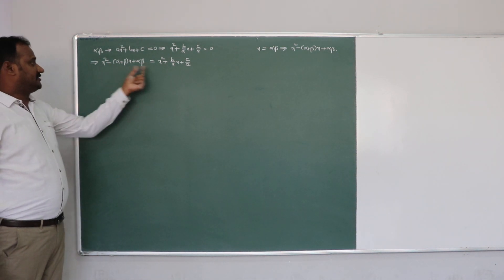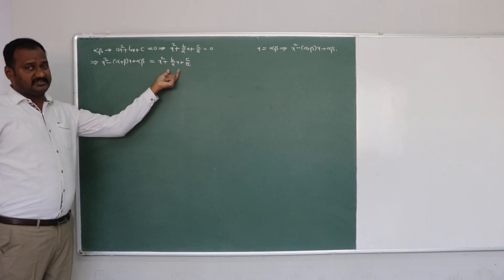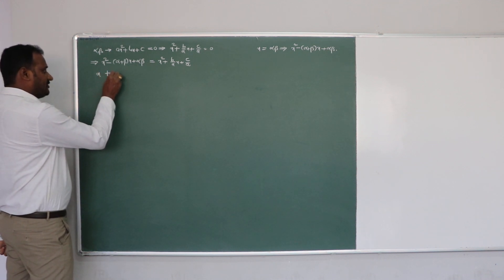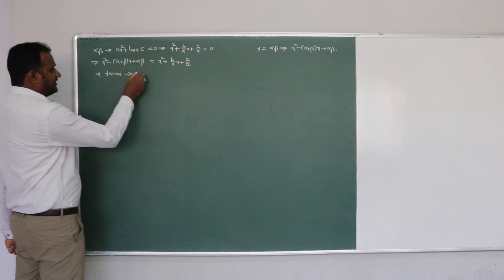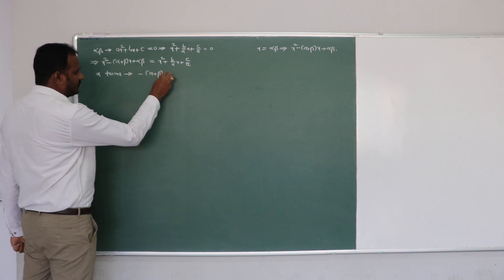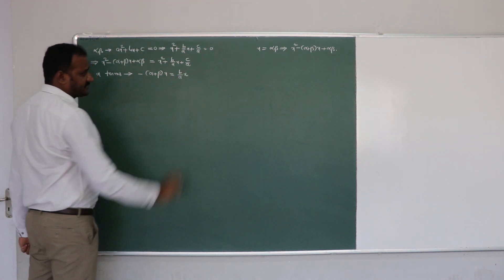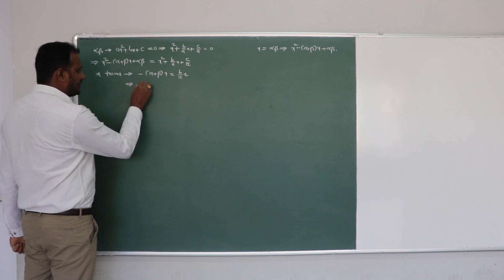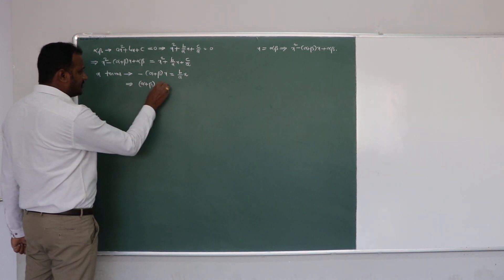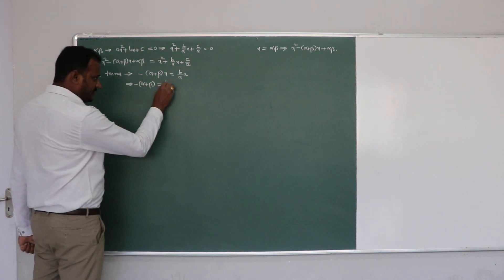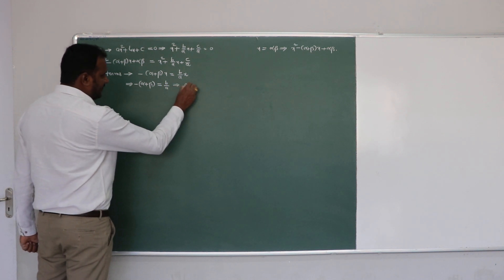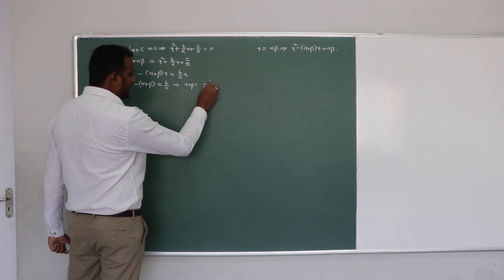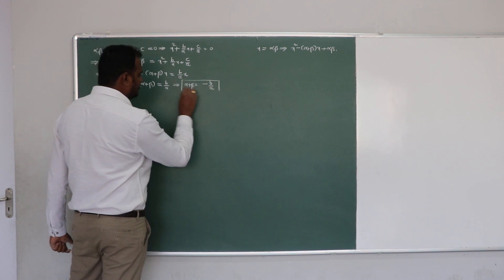You can now compare like terms: x squared term to x squared term, x term to x term, and constant to constant. When you compare the x terms, here the x term is minus (alpha plus beta) times x, and there the x term is (b/a) times x. So x equals x means the coefficients are equal, which implies alpha plus beta equals minus b/a.